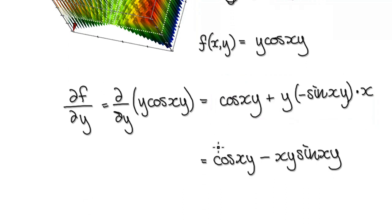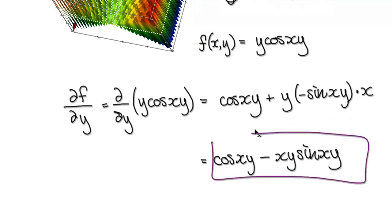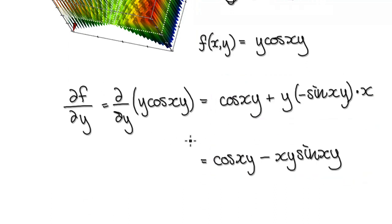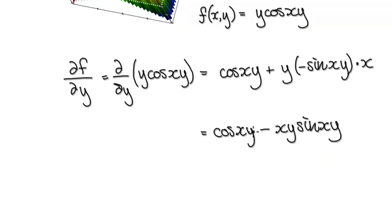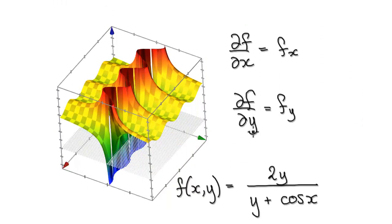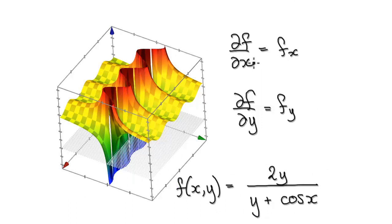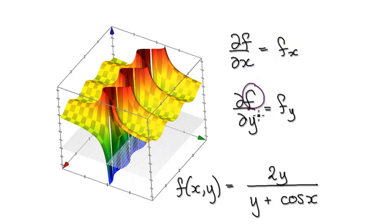Now tidy this whole thing up and you get your partial derivative with respect to y. Next example: here we've got a new surface. When you differentiate with respect to x it can be written as this notation, and when you differentiate with respect to y it can be written as this notation.